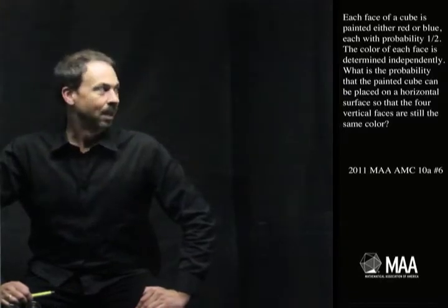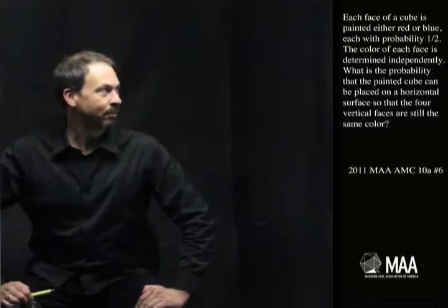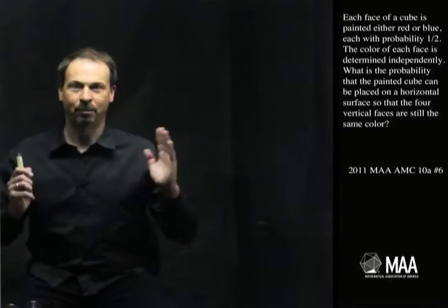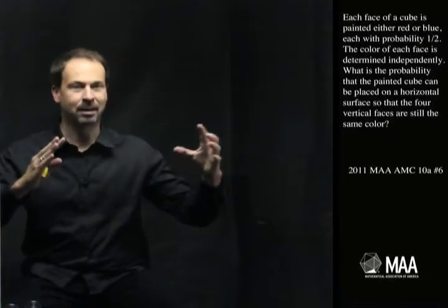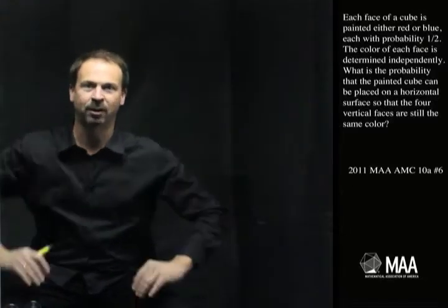I'm going to make sense of this. So I've got a cube that's being painted with either red or blue on each face, each with probability a half, and I guess the independent stuff means that whatever I do to one face, it's not going to affect what I do to the next face.